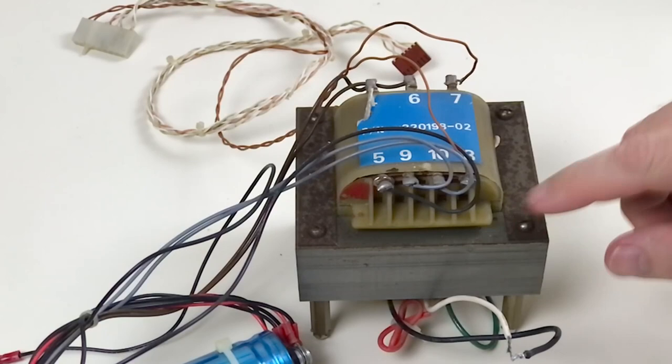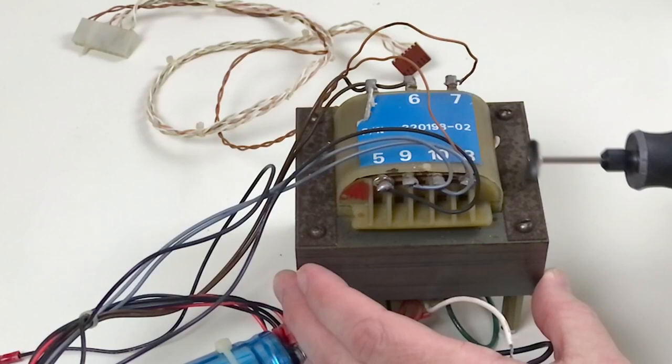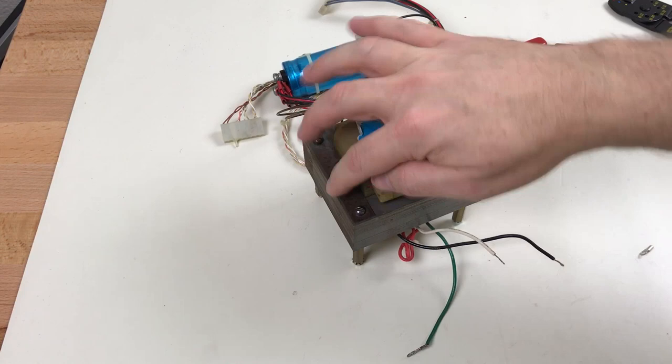The transformer has some corrosion on it here that I'm going to make an attempt to clean up. Here's the before. I'm going to use the wire brush attachment on the Dremel. And here it is after I cleaned it up with the Dremel tool. It looks a little better.